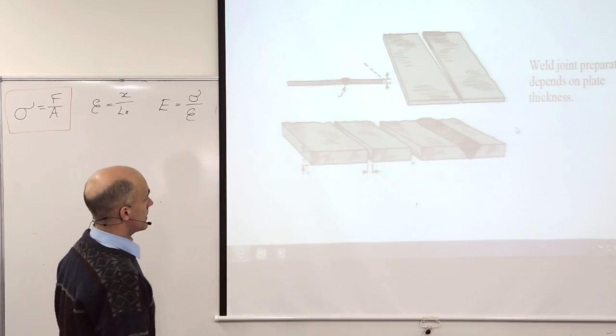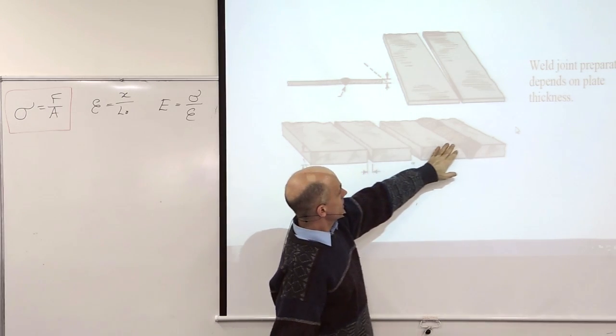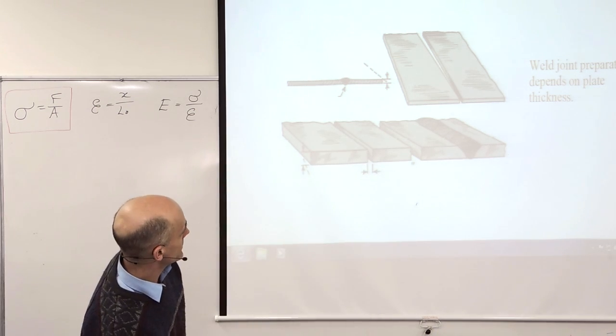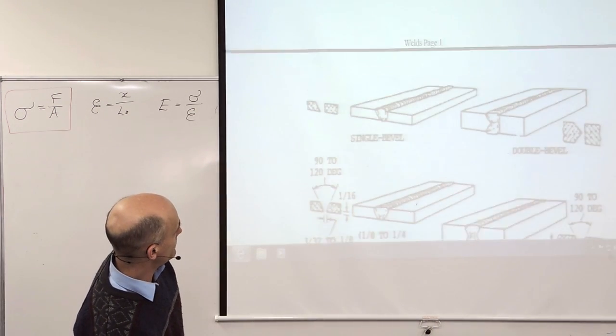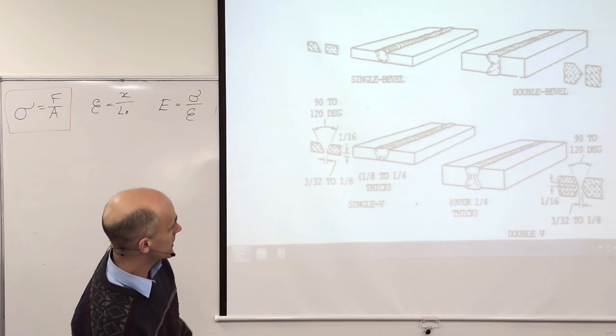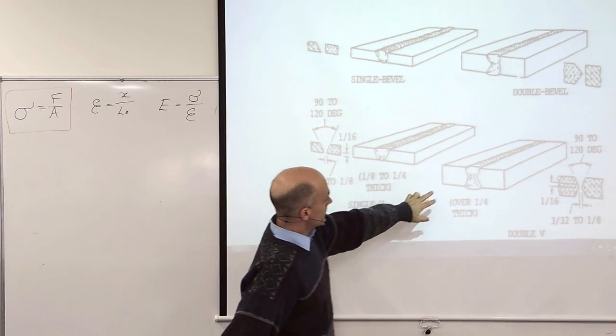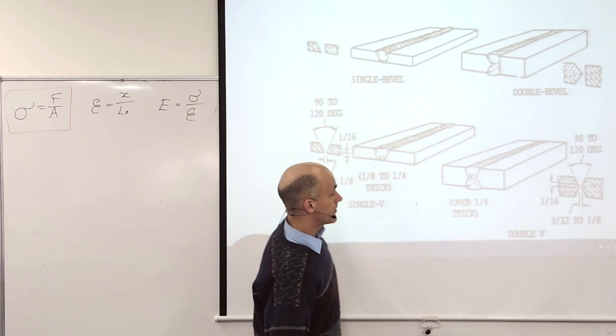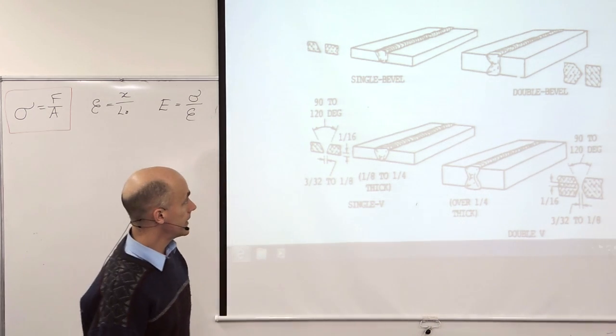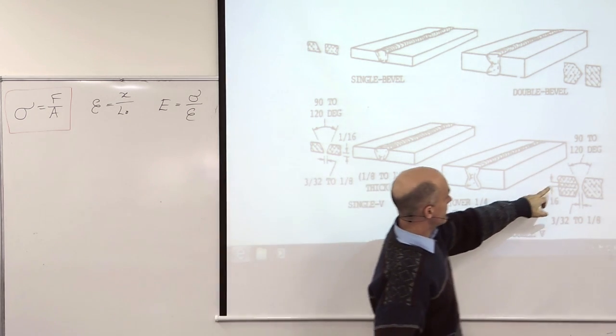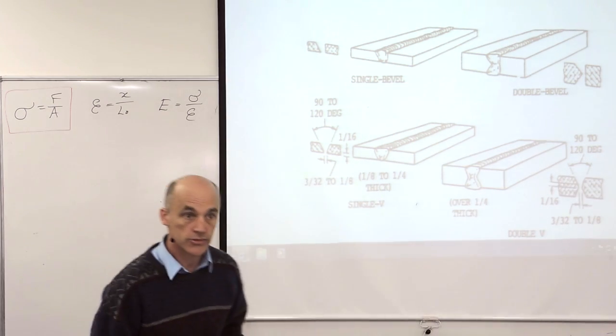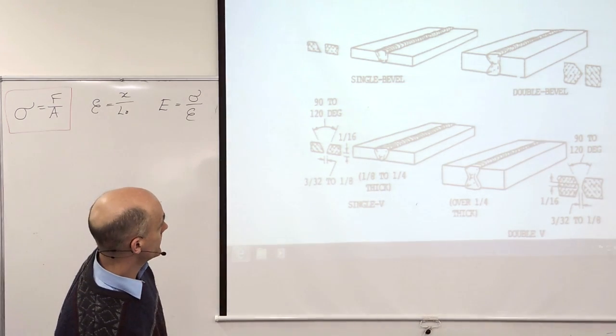In practice a butt joint usually needs some sort of preparation as the plates get thicker. So we've got some examples of these here in the PDF. Different sorts of butt joints depending on the thickness. When it gets thicker sometimes you have to come and weld from both sides of the plate. So you get enough penetration. And you have to prepare the plates with bevel edges on here so that the weld can fill up and get penetration all the way to the centre of the plate when they're very thick.